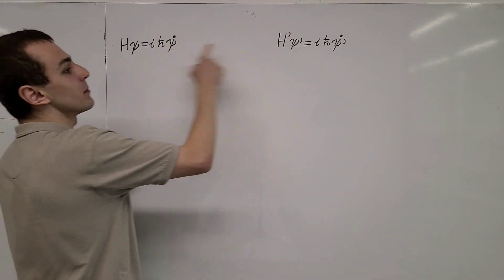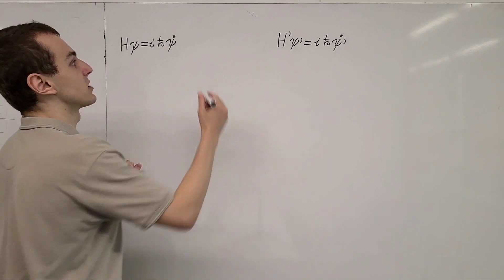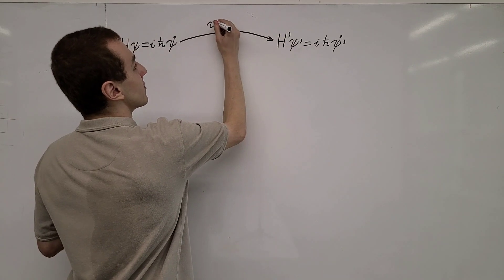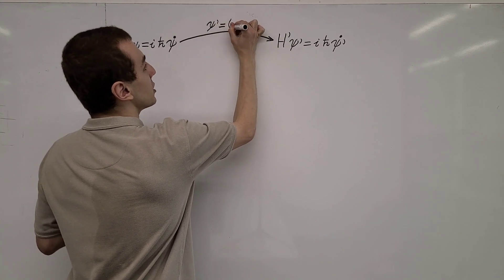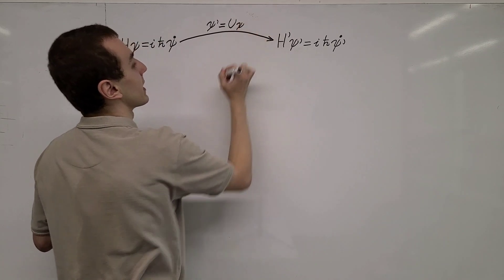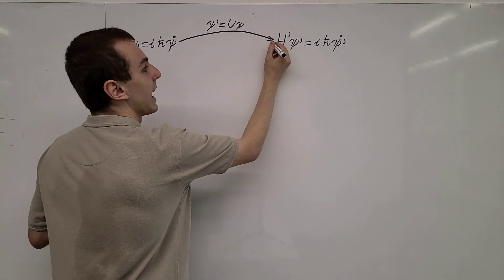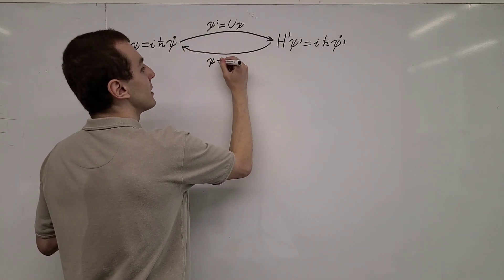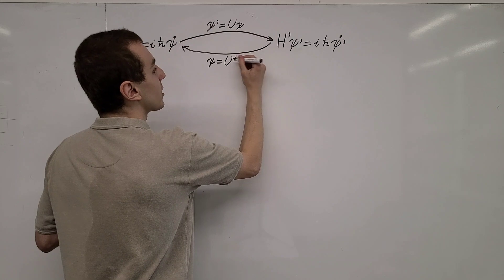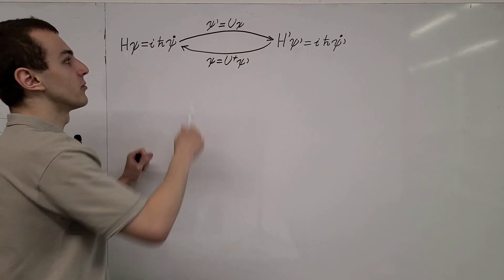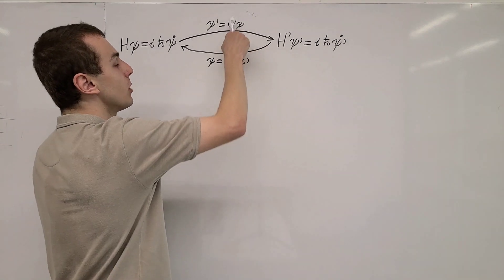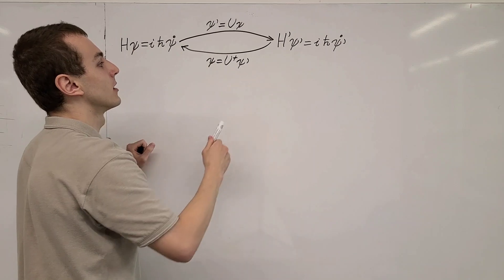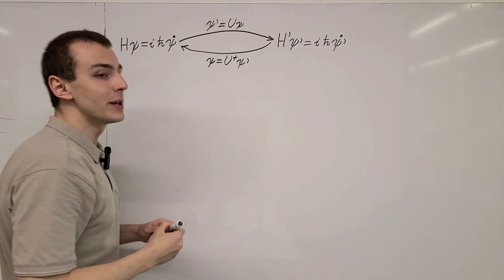How do we go from this frame to the primed frame? Well, it's with a unitary transformation. To go from here to here, we define psi' to be equal to U times psi, where U is our unitary transformation. And if we want to go back the other way, we define psi to be equal to U-dagger times psi'. So if you want to go forward you apply U, and if you want to go backwards you apply U-dagger. This dagger denotes the Hermitian adjoint.